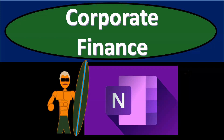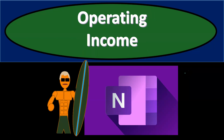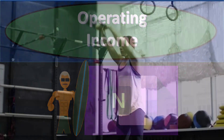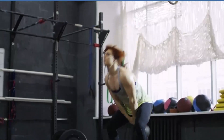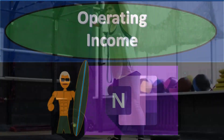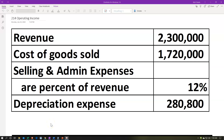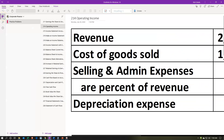Corporate Finance OneNote Practice Problem. In this presentation we will work a practice problem in OneNote related to the calculation of operating income, which is going to be a component of the income statement. We're going to be under the 214 operating income tab under the practice problems section.